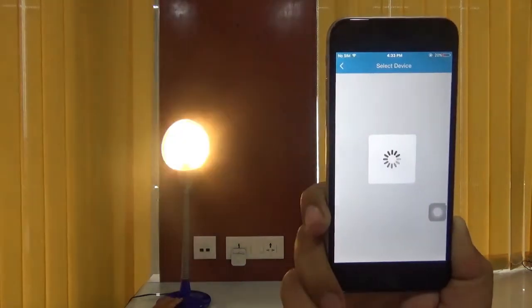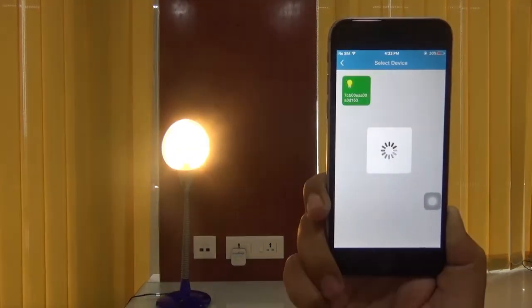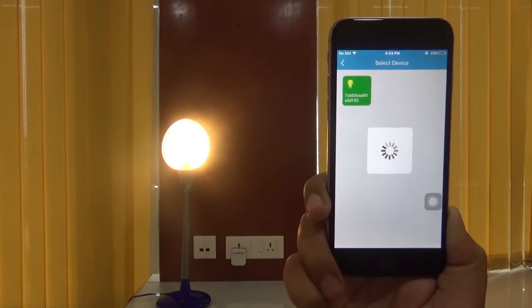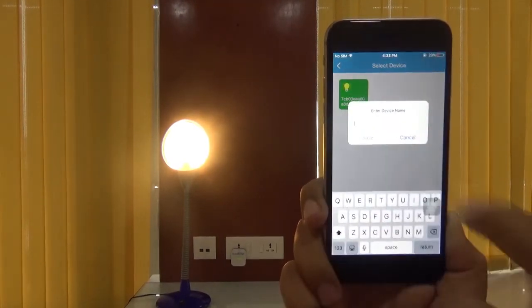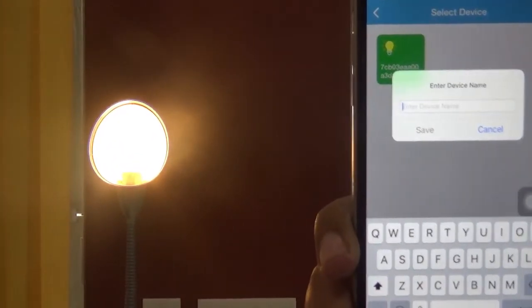In order to make your light bulb in commissioning mode, you need to switch it on and off till it starts blinking. Let's give a name to the light bulb. We will give kitchen light. Tap on save button after that.